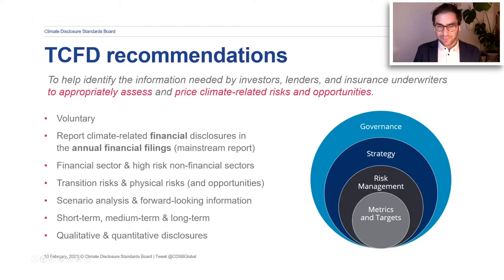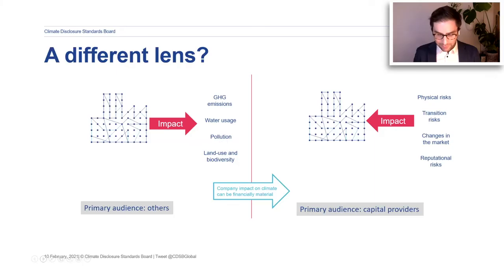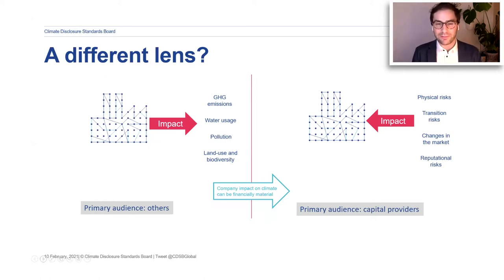The four areas of the recommendations are shown in what we call the 'onion diagram': Governance, Strategy, Risk Management, and Metrics and Targets. Each sits within the other — Strategy is part of Governance, Risk Management is part of Strategy, and Metrics and Targets is part of Risk Management. They're all interconnected, focusing in on different areas of a complete picture that your business paints for readers of your annual report.